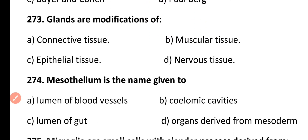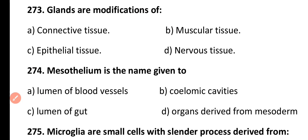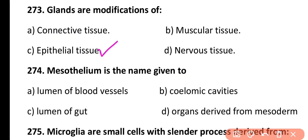Question 273. Glands are modification of: connective tissue, muscular tissue, epithelial tissue, or nervous tissue. Correct answer is Option C. Glands are modification of epithelial tissue.